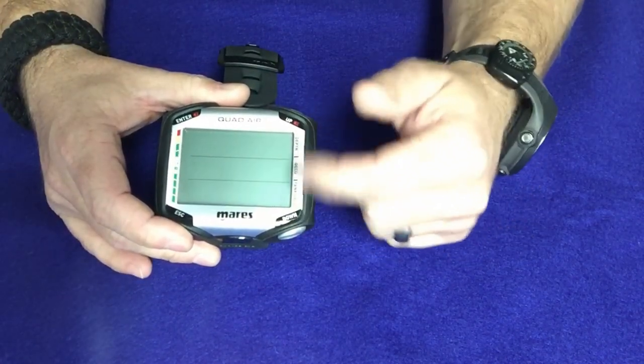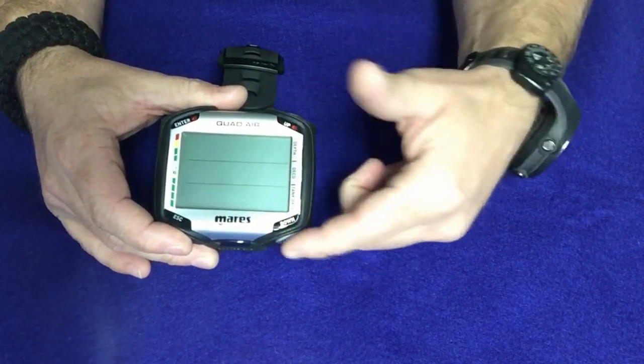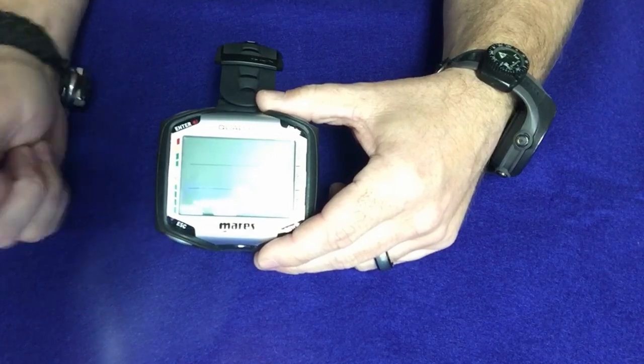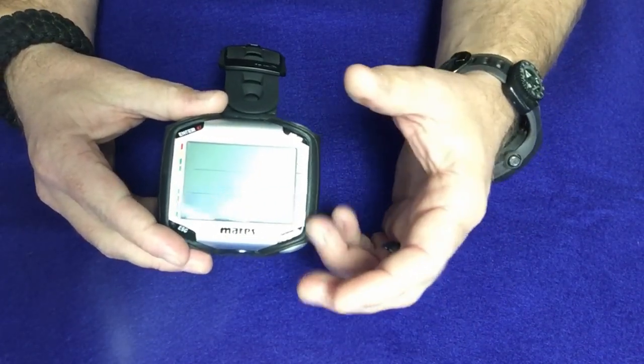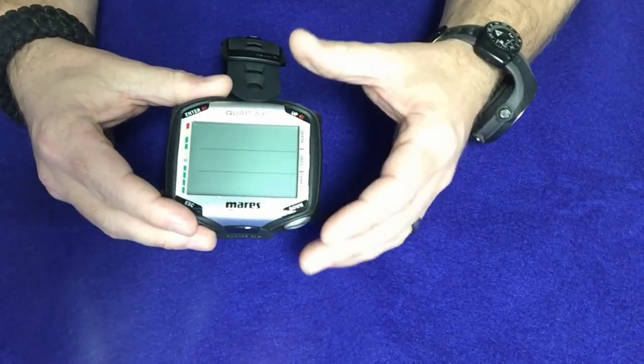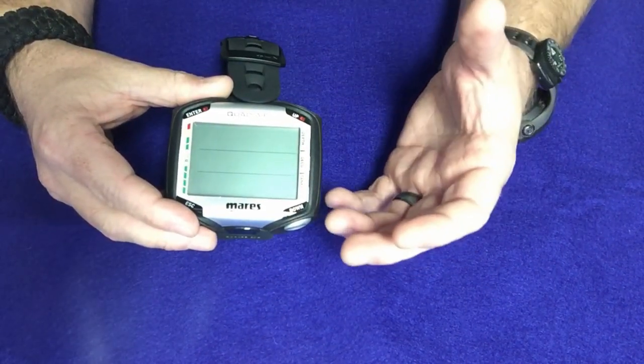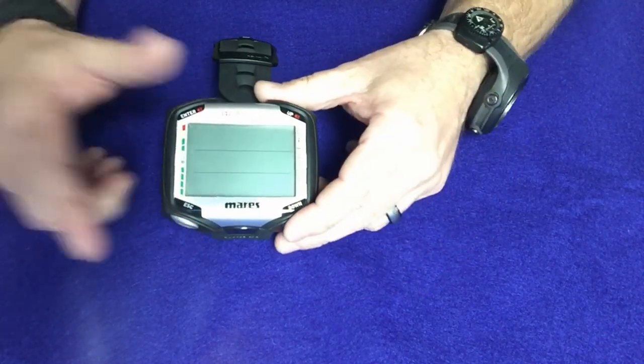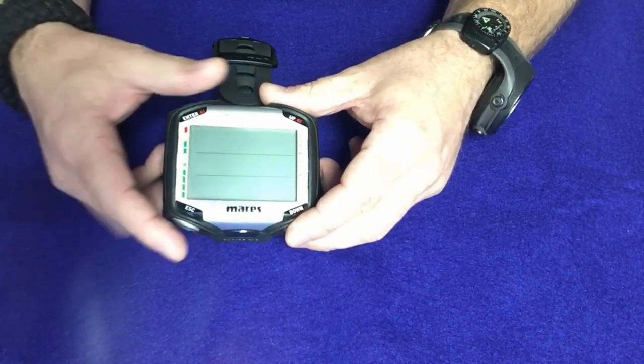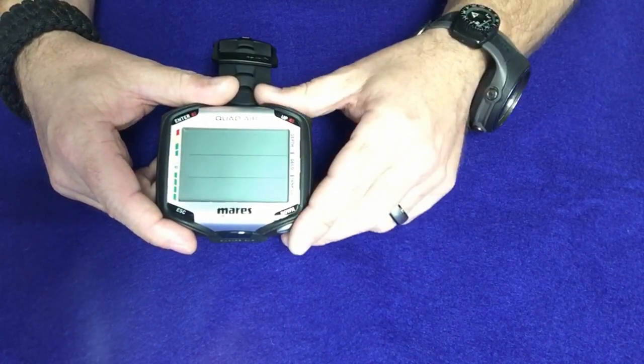So on this model in particular, there's four buttons. We have an up and down button. We also have an enter and an escape button as well. They all do something a little bit different when you're at the surface. Underwater though, they're mirrored buttons. So whether you wear your computer on your left or your right wrist, these two buttons will mimic these two buttons when underwater.